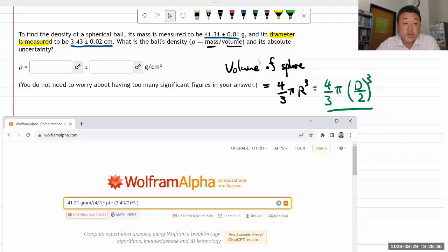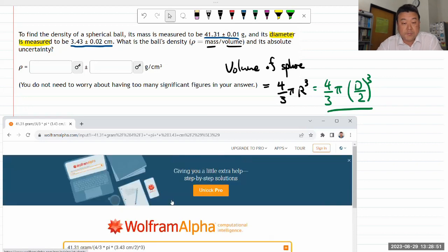Let me actually put in the units here as well. One of the reasons I like WolframAlpha is it's unit-aware. If the question had given you grams and centimeters but asked for kilograms per cubic meter, then WolframAlpha can actually do the unit conversion for you.